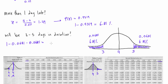That calculation gives us 0.8638, which is 86.38%. So there's an 86% chance of this activity finishing between three and five days in duration — which is actually a pretty good chance. You can confidently say the activity has an 86% chance of being between three and five days.